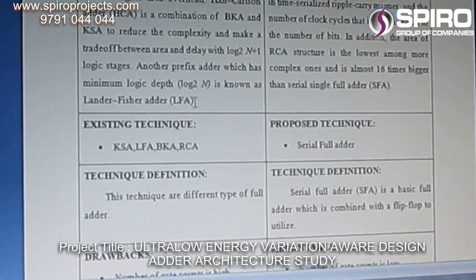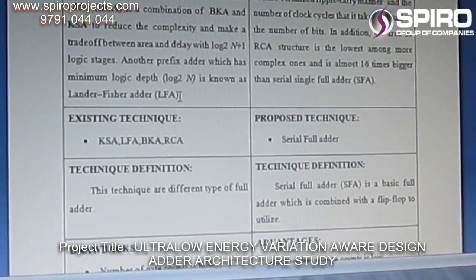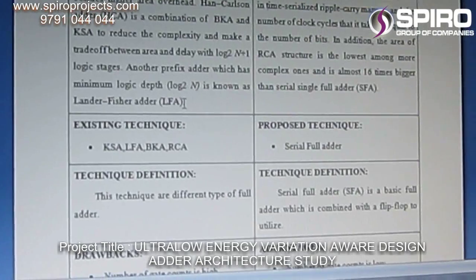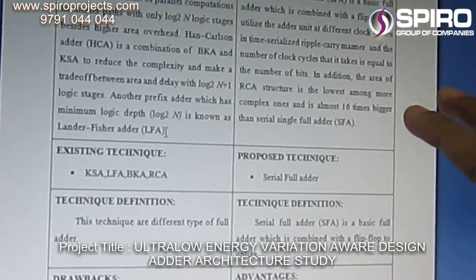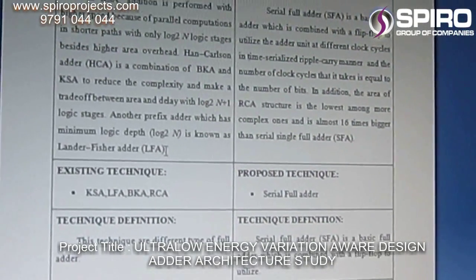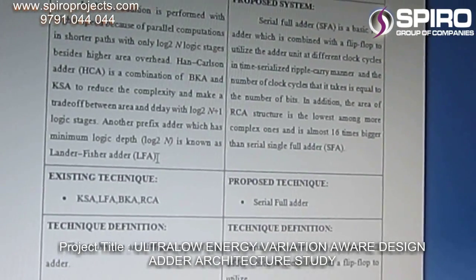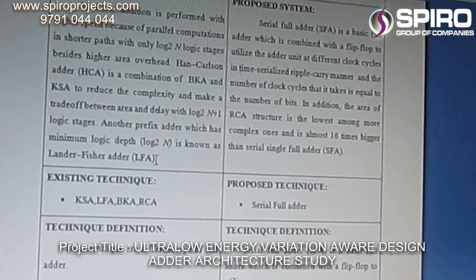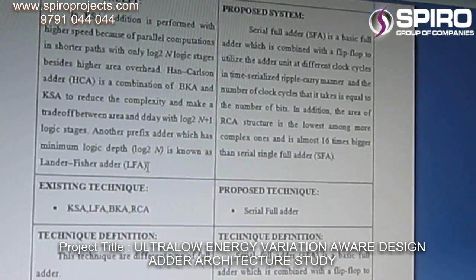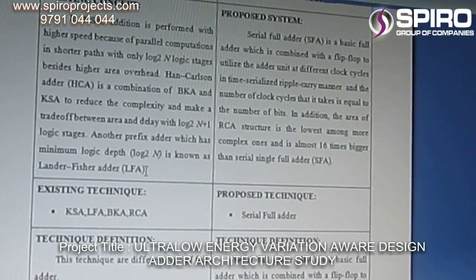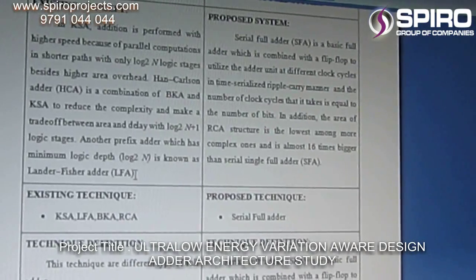In the proposed system, why we go for the serial full adder: the reason is we are adding a flip-flop in place. Why we are adding the flip-flop? To utilize the circuits, to utilize the full adder. However many number of bits we are using, to add N number of clock cycles we get the output. But in a parallel adder, we didn't get it in a proper manner. So we are going for the serial full adder.